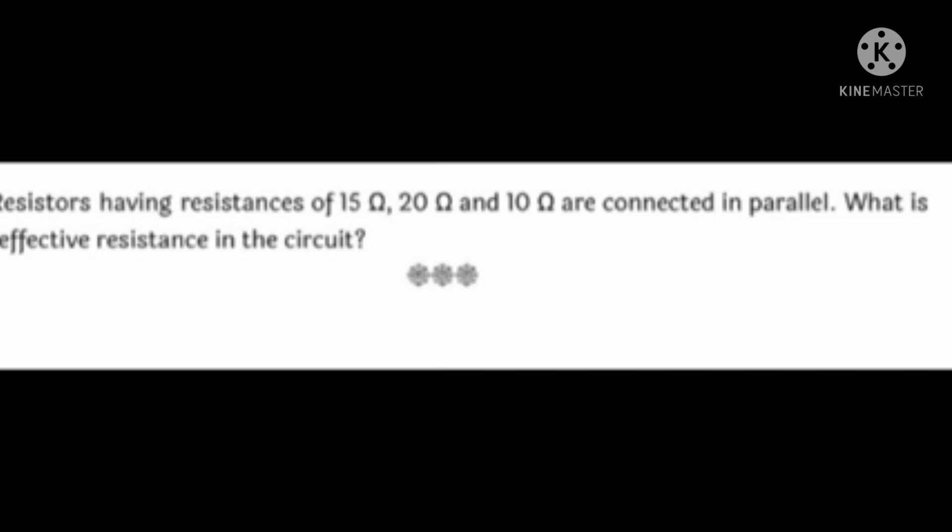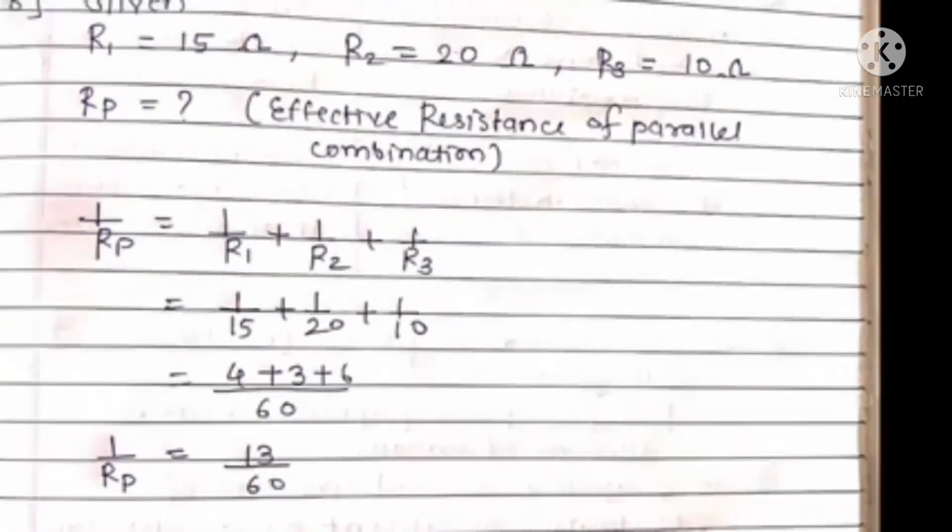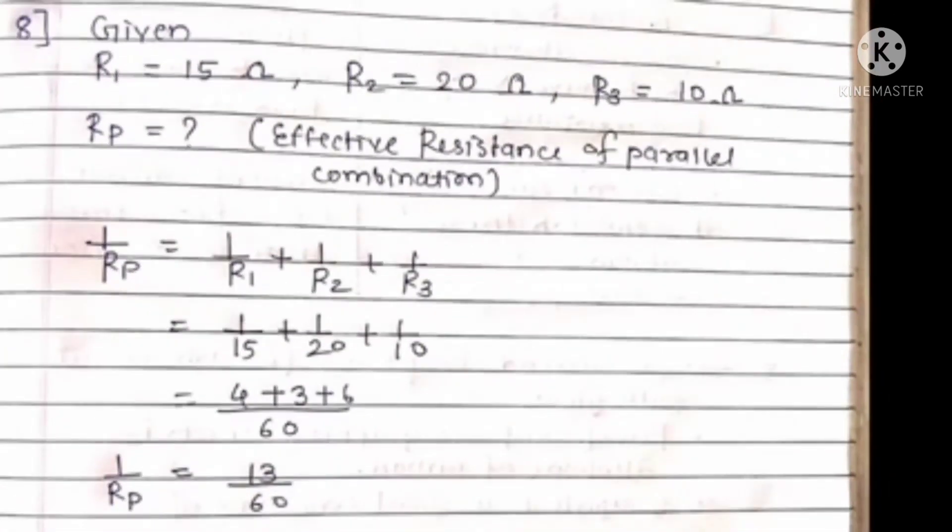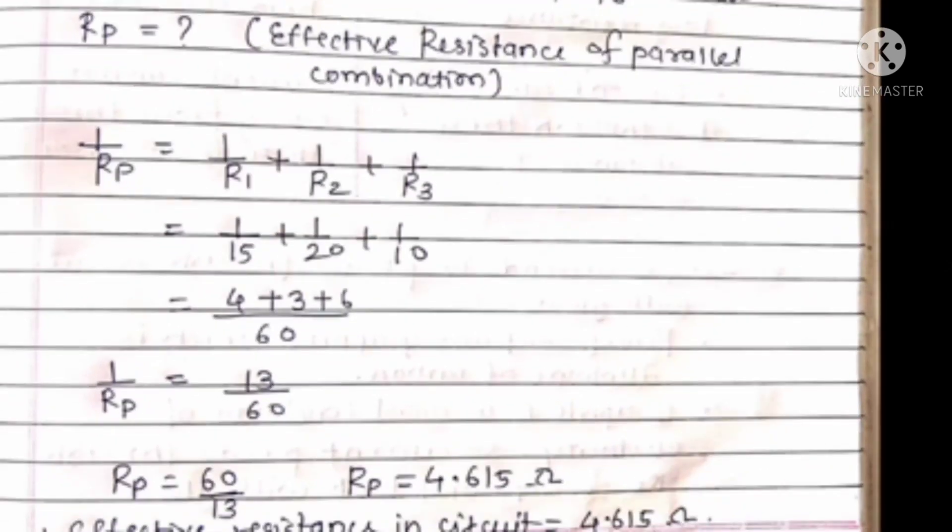Question number 8: Resistors having resistances of 15 ohm, 20 ohm, 10 ohm are connected in parallel. What is the effective resistance in the circuit? Solution: Given R1 equals 15 ohm, R2 equals 20 ohm, R3 equals 10 ohm. We have to find Rp, that means effective resistance of parallel combination.